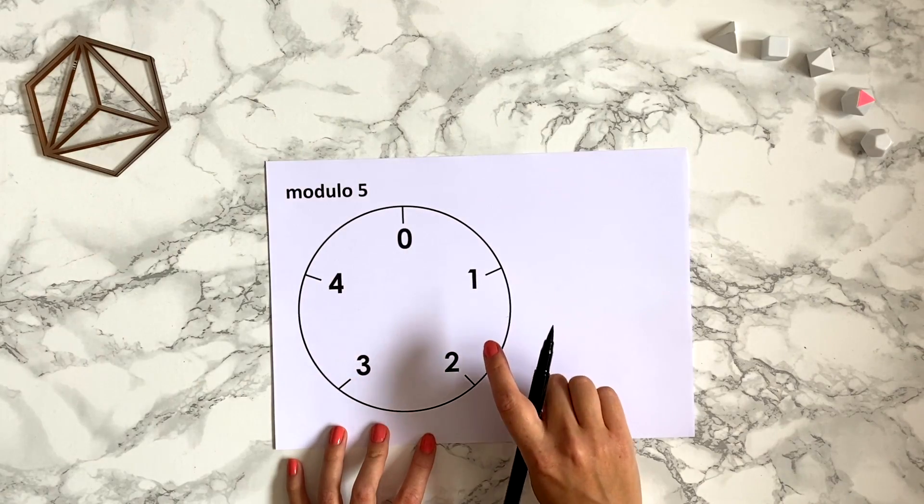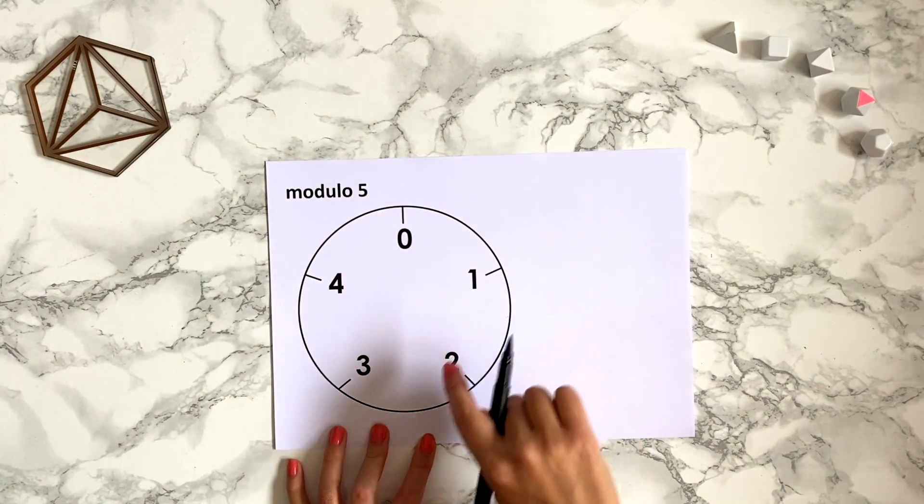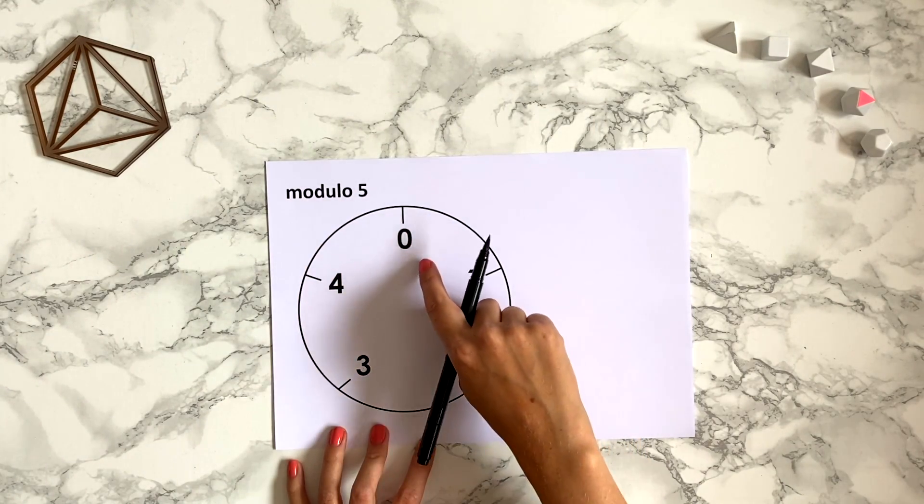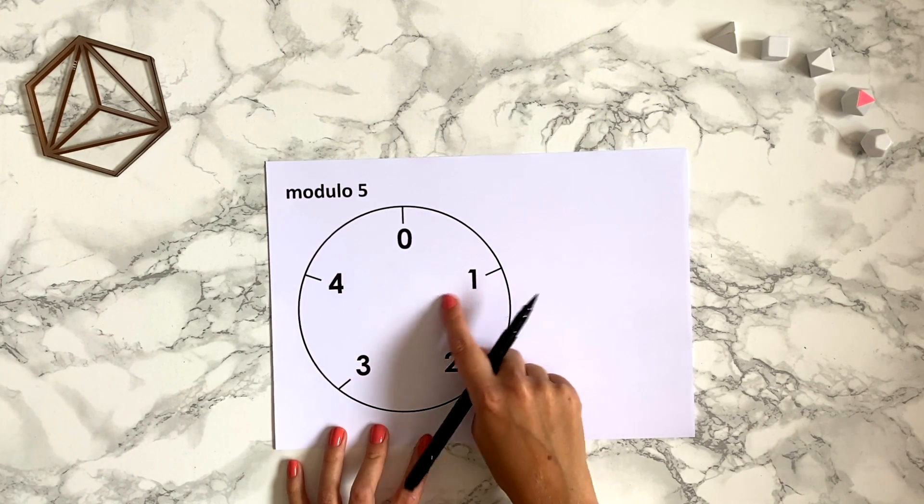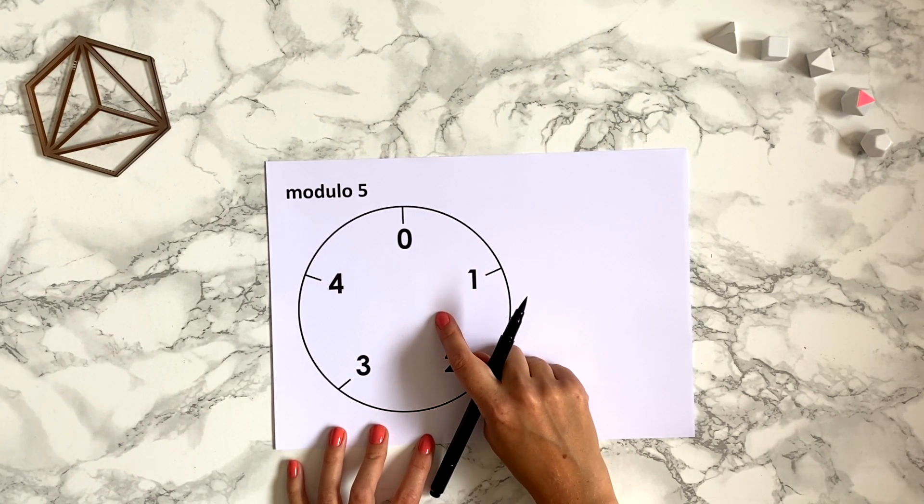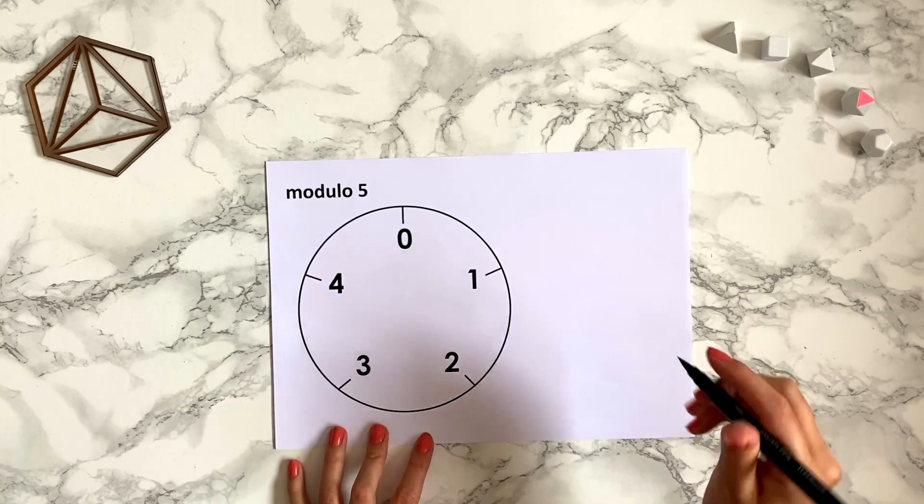Well perhaps you can imagine if we kept adding numbers next to the clock as before, the 5 would be by the 0 and then 6 would be next to the 1. So in fact 6 is congruent to 1 modulo 5.